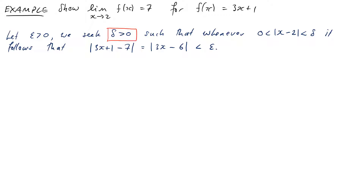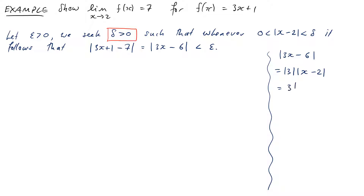In the working area, I'll start by looking at this absolute value. We can see that we can factor it so that |3x - 6| equals |3| times |x - 2|, which obviously just equals 3|x - 2|. What I'm trying to do when manipulating this expression is get |x - 2| to appear, because I know I can control how big this is by choosing a particular delta.